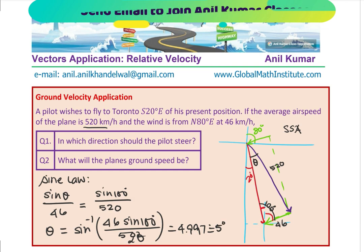Let us redo this: 46 times sin(100°) divided by 520, then sin⁻¹ of the answer gives 4.997 degrees. So theta is approximately 5 degrees. That means the total steering direction will be 20 plus 5 — steering will be south 25 degrees east. Does that make sense? So we have found the direction in which the pilot should steer: from south, 20 plus 5 is 25 degrees east.